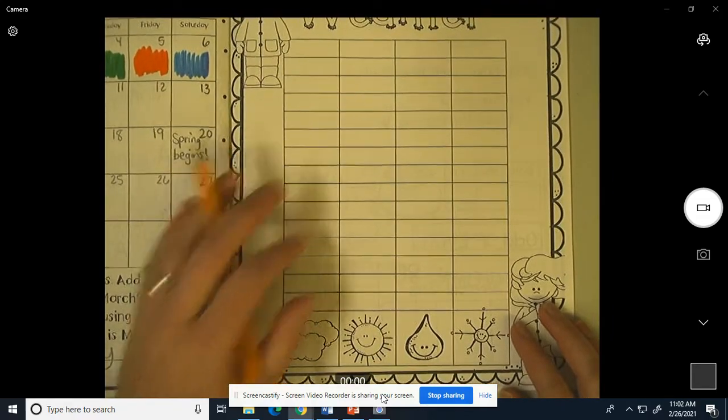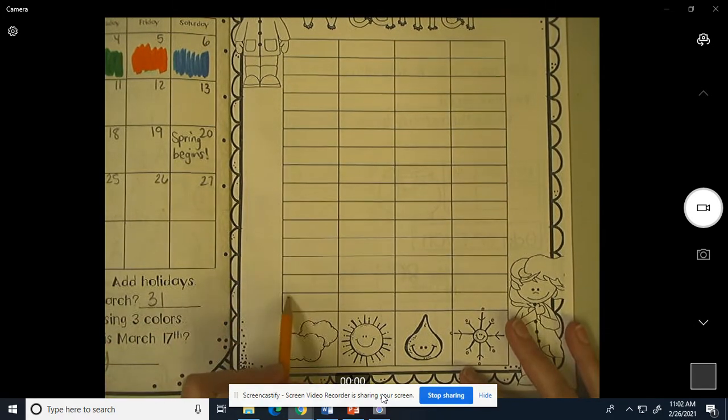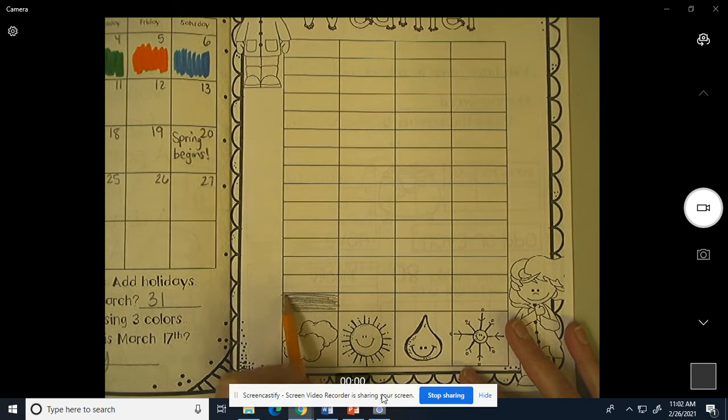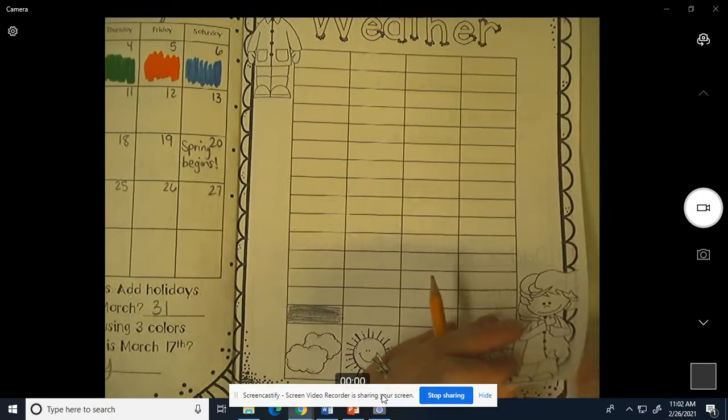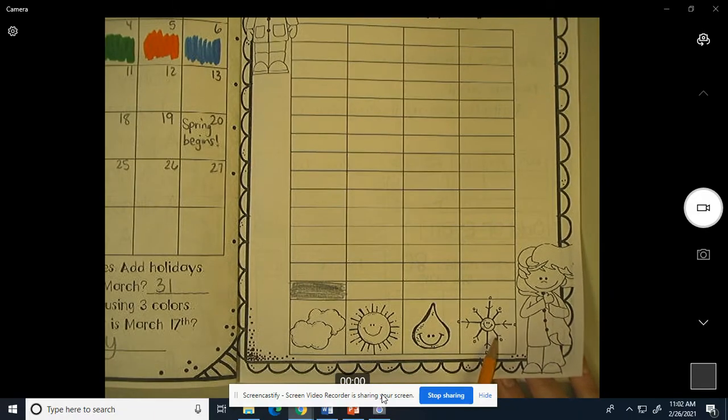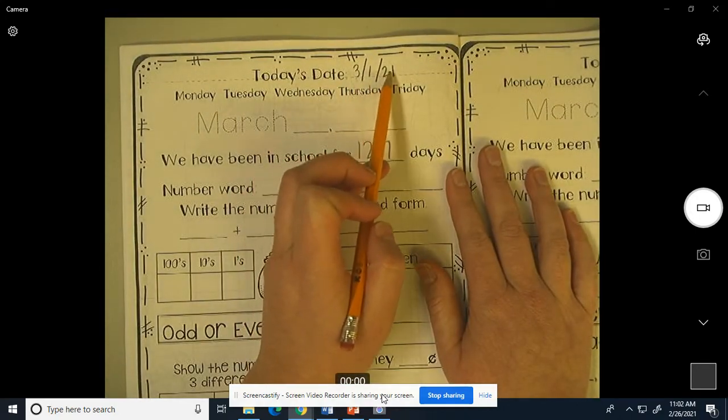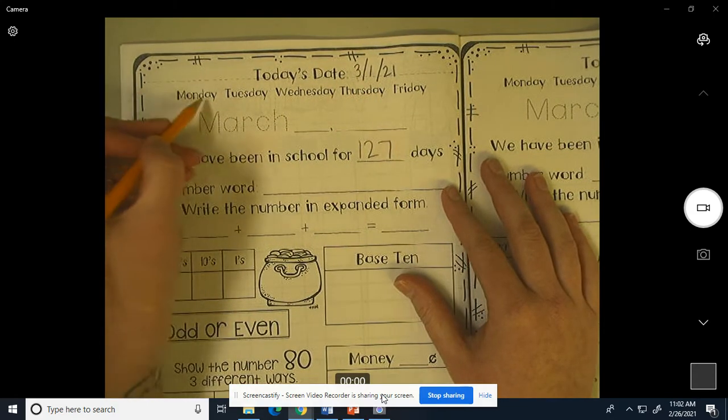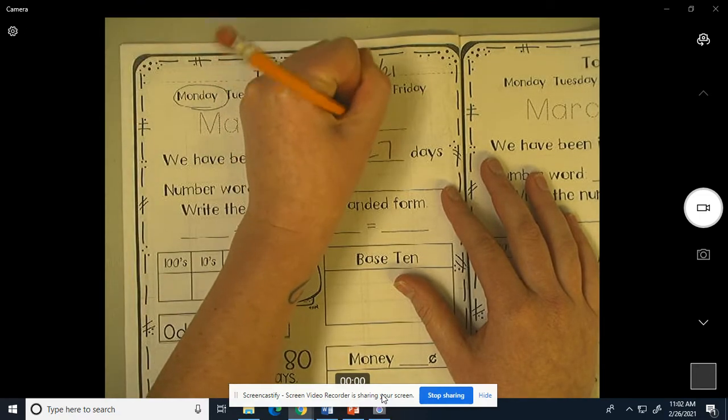All right, let's look at our weather today. It looks like outside is cloudy where I am. If it's not cloudy where you are, you can do a different weather at your house. You could do sunny, rainy, or snowing. Hopefully it's not snowing. The date is 3-1-21, March 1st, 2021. And today is Monday. Monday, March 1st, 2021.